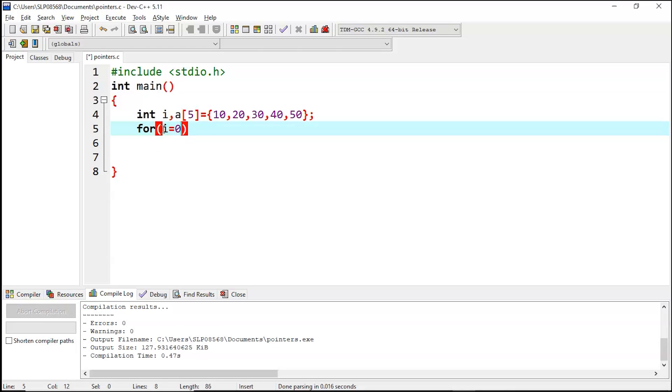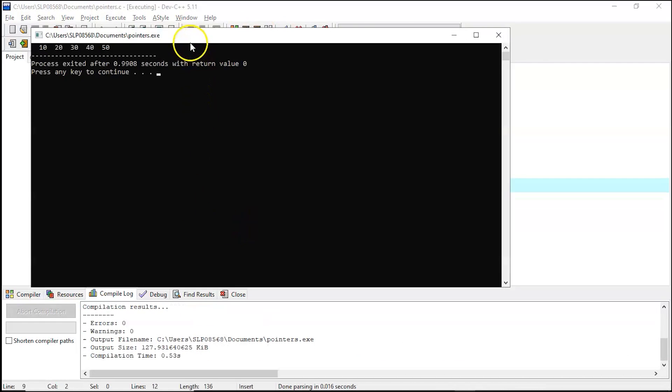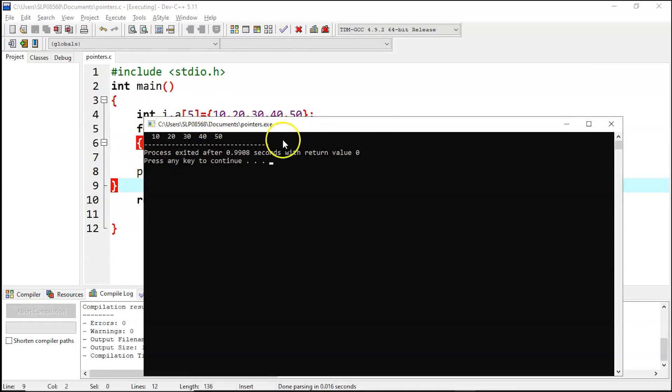So for i equals 0 till i less than 5 and i plus plus, print the values. As you can see, the values are printed: 10, 20, 30, 40, and 50.